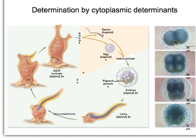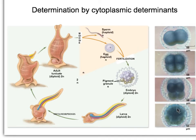They give the embryo an orientation and direction. If you look at this microscopic image, you have the cells that are starting to divide. The cytoplasmic determinants are placed at the bottom of the cells. When those cells divide, those that divide from the bottom will have a higher concentration of cytoplasmic determinants than the cells that divide from the top.